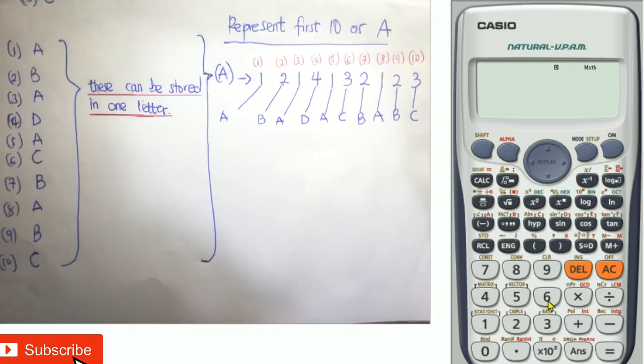Moving on to the second part, we have a question on board. We have ten objective answers, one to ten: one is A, two is B, three is A, four is D, five is A, six is C, seven is B, eight is A, and so on. Now solving this on the calculator, this is how it would be.